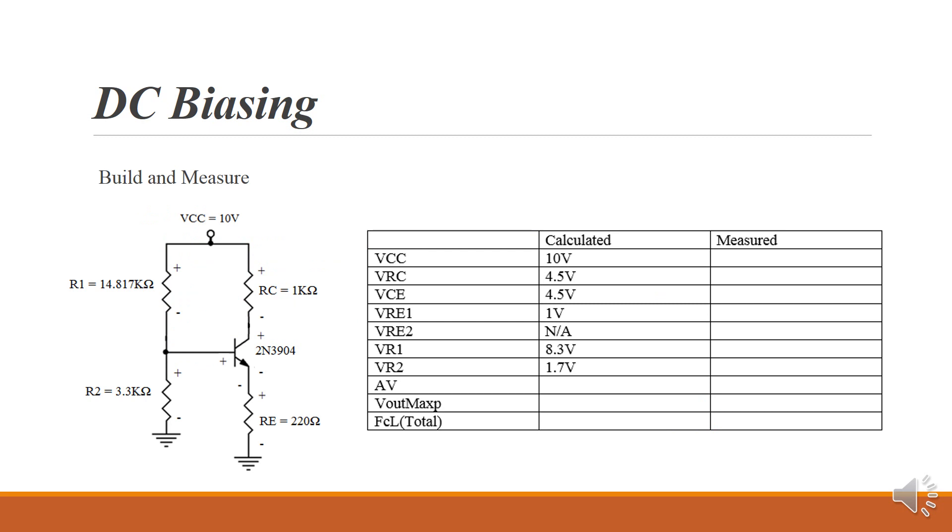Here's the final DC circuit. It's a voltage divider bias circuit. To get to this point, we needed the 10-volt VCC and the RL of 1K. From those two points, we were able to calculate the entire rest of the DC circuit. I pulled the chart from the handout here, and we've got VCC, VRC, VCE, VRE1.